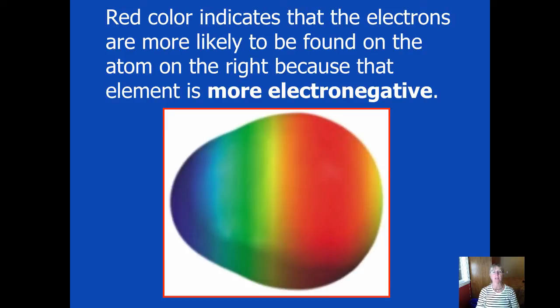In our pictures in this podcast today you will see red color indicating that this is a molecule that has an atom on one side or the other, in this particular case on the right, that is much more electronegative. So red colors are symbolizing that this is where the electrons are more likely to be found at any moment in time.